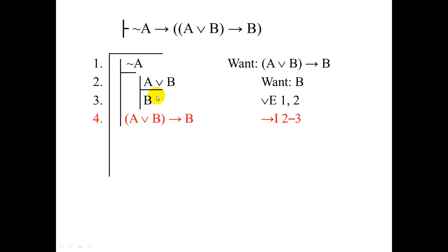So we can pop out and write the conditional. A or B implies B. Conditional elimination, lines two and three. And we've now gone from not A to this conditional. So we can pop out again and write the tautology that we wanted to prove. Not A implies A or B implies B. And that's conditional introduction, lines one through four.